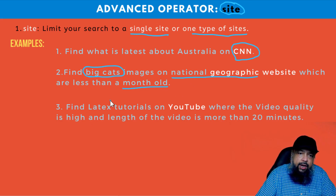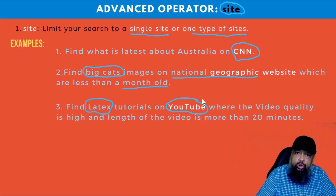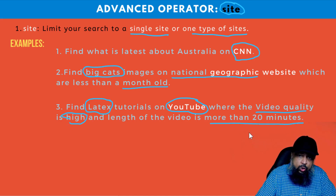The third scenario is that I want to find LaTeX tutorials. LaTeX is a typesetting software, just like Microsoft Word. I want to find these tutorials on YouTube, which is a video hosting website. I also want the video quality to be high and the video must be more than 20 minutes long. We will accomplish this by using filters available in Google search.